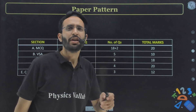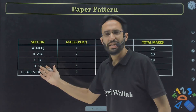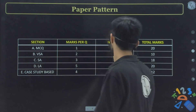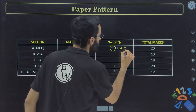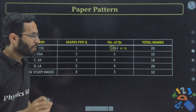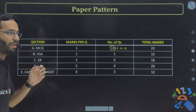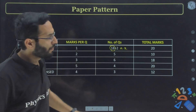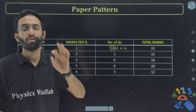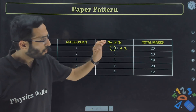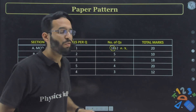Your paper pattern comprises five sections. The very first section contains MCQs — 18 multiple choice questions and 2 assertion-reason questions, totaling 20 marks. If you want to score 20 out of 20, you should not skip any chapter. You need to know all the concepts, strategies, and shortcuts.